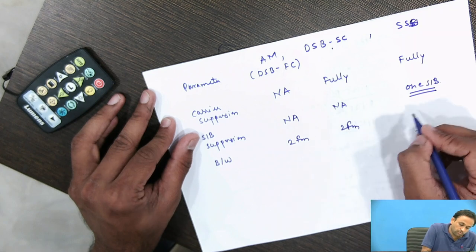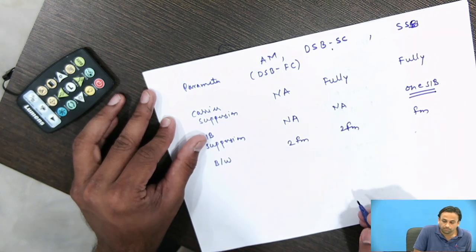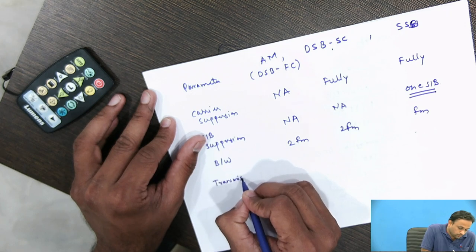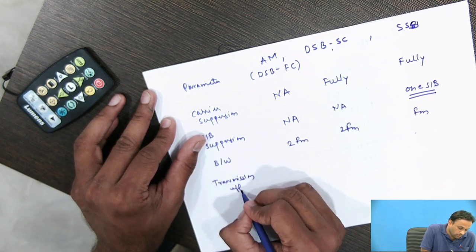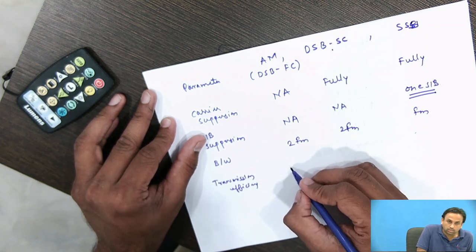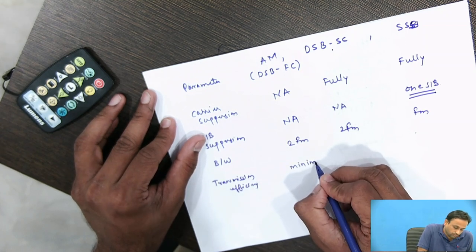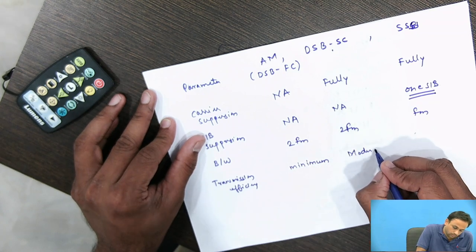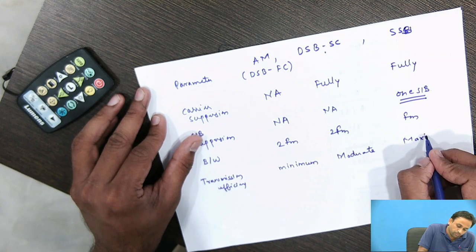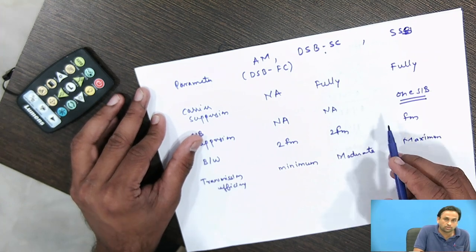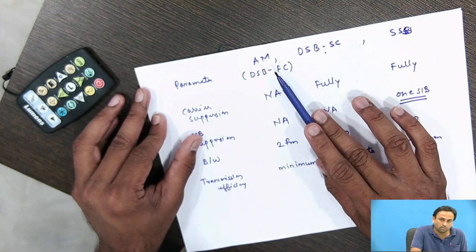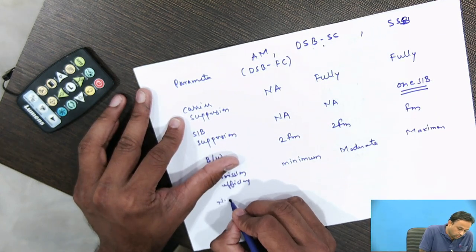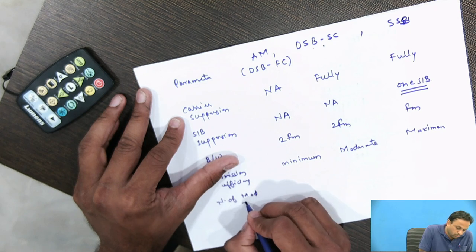Third parameter is bandwidth: AM requires 2fm, DSB-SC also requires 2fm, and SSB requires only fm. For transmission efficiency, AM is minimum, DSB-SC is moderate, and SSB is maximum when comparing these three signals.